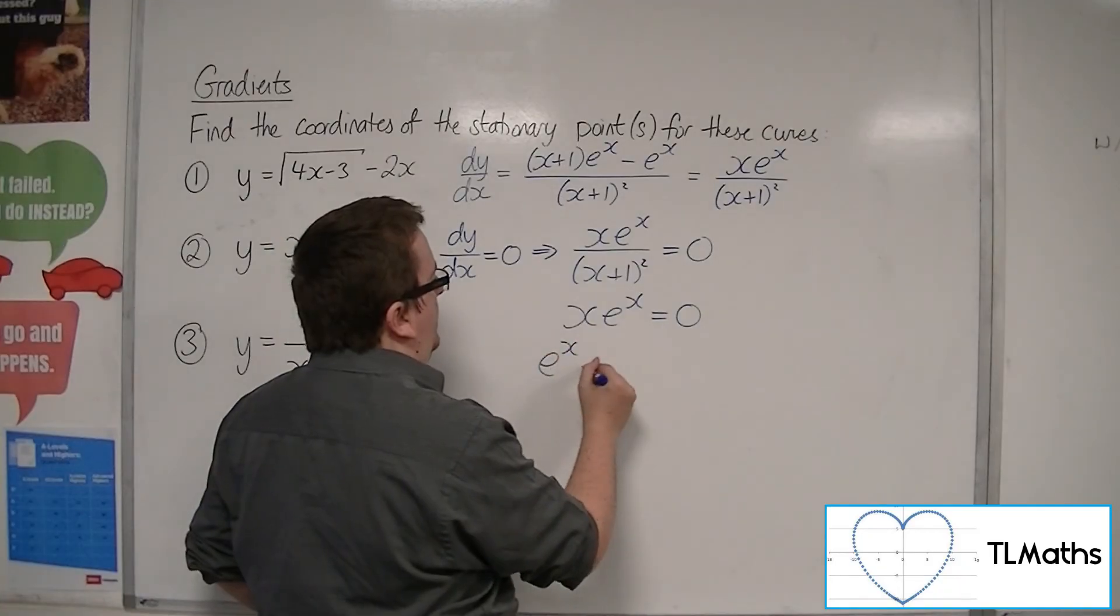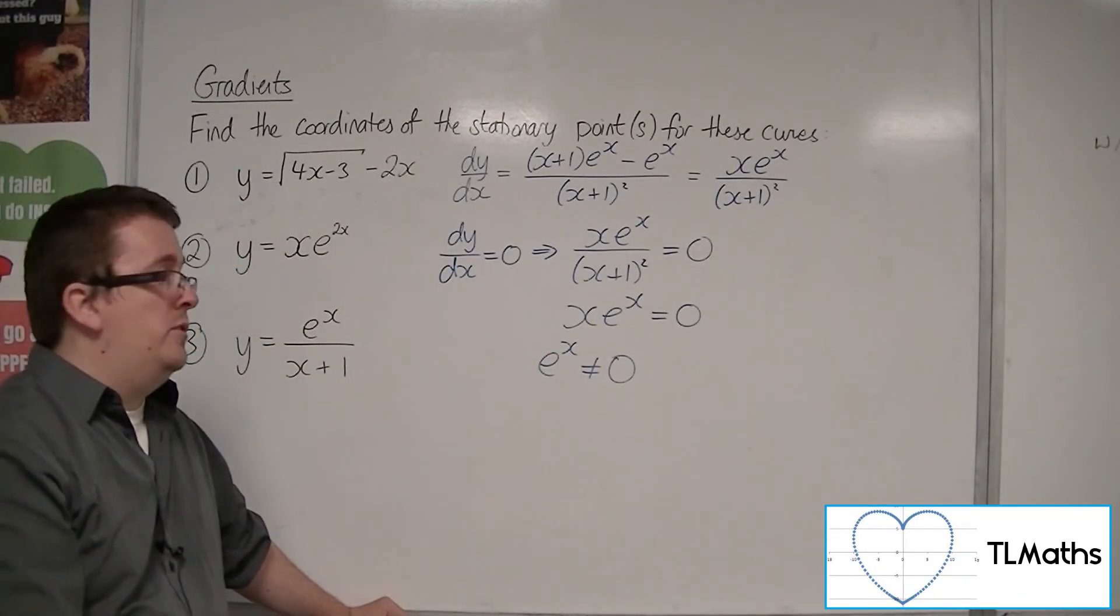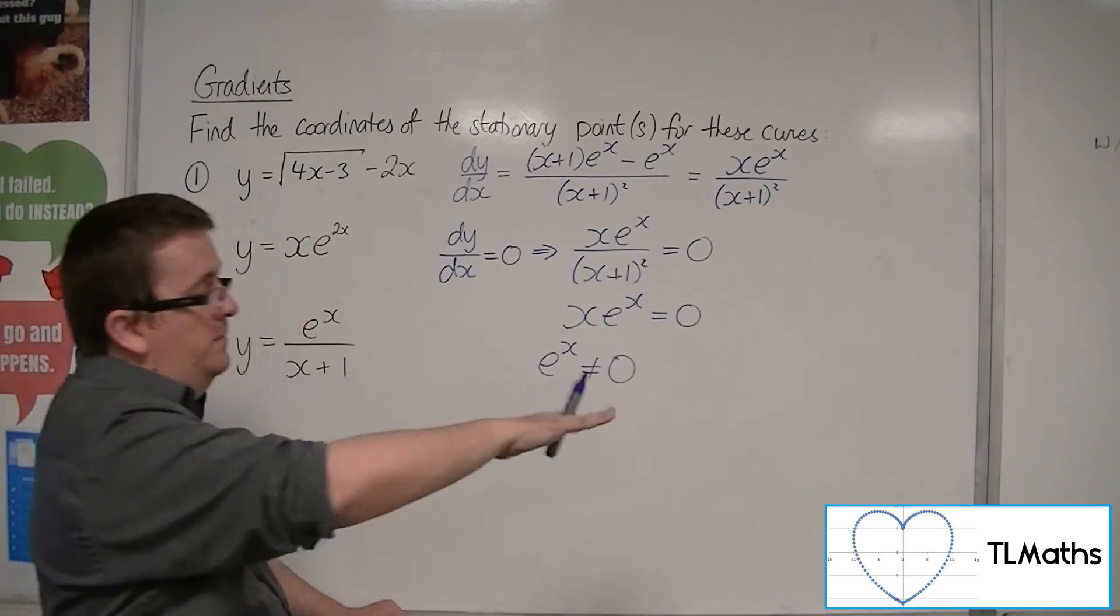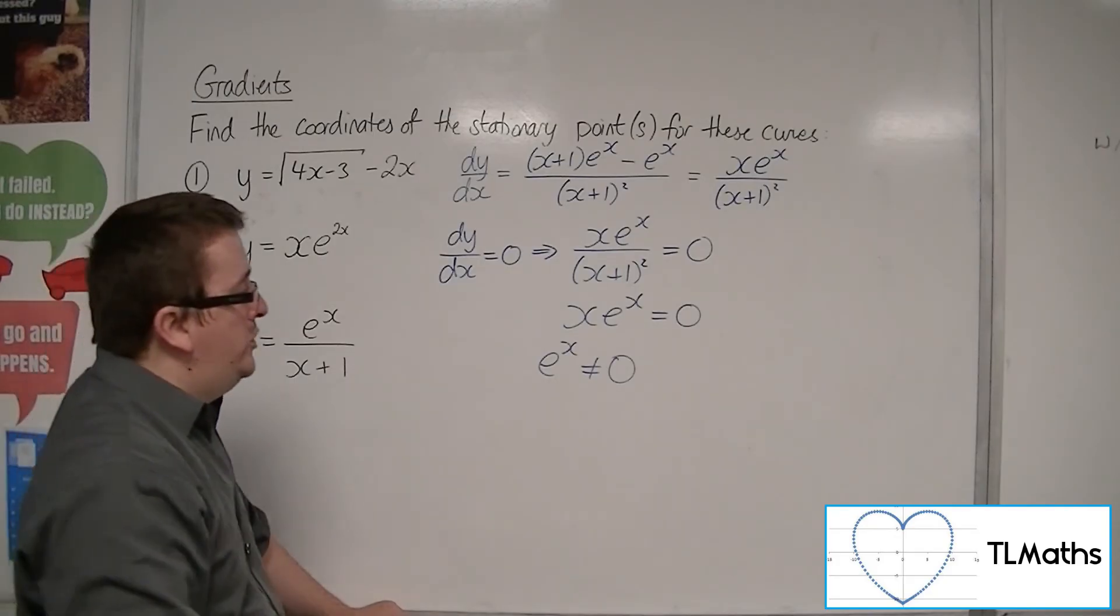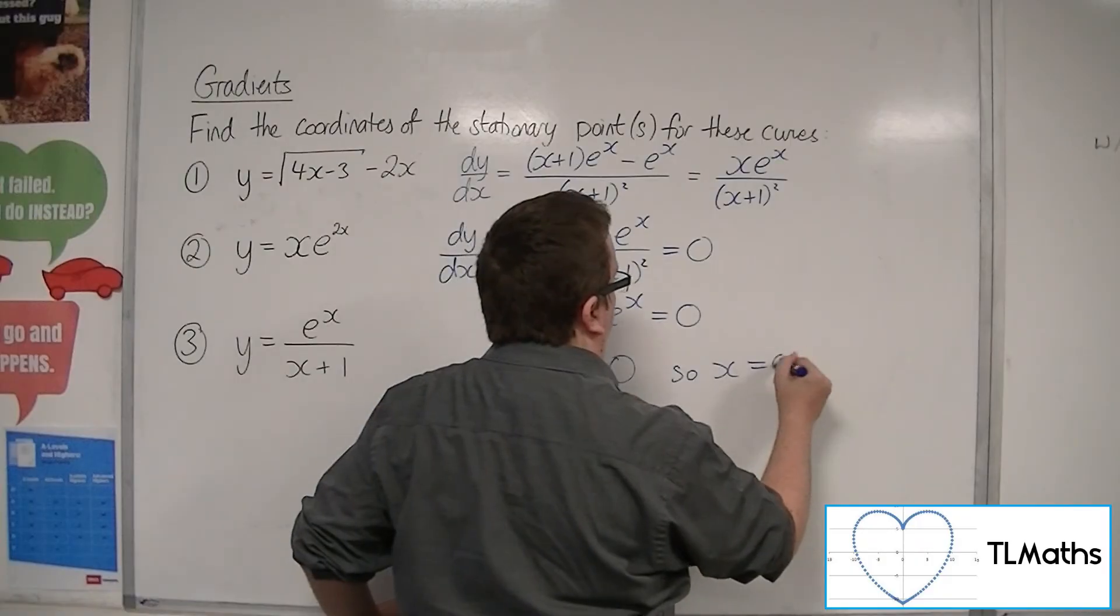Now e^x cannot be 0 for the same reason as e^(2x) couldn't be 0 in the previous example. e^x has a horizontal asymptote at the x-axis, never reaches it. And so, x must be 0.